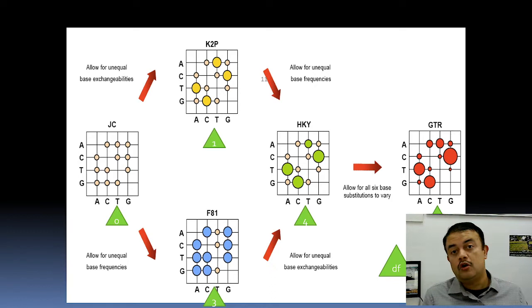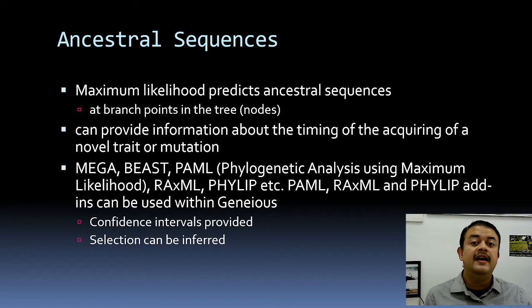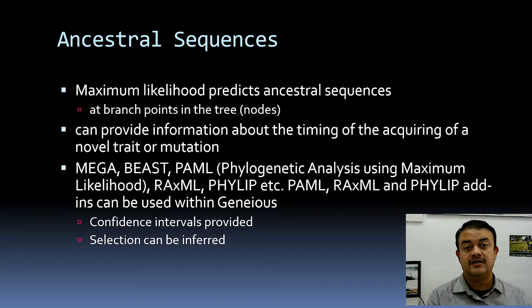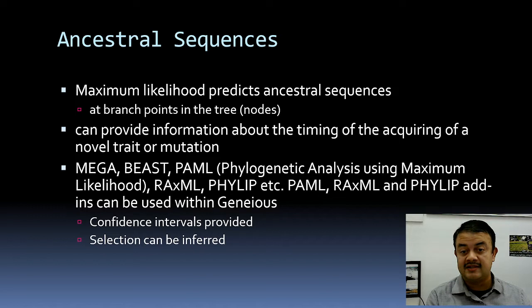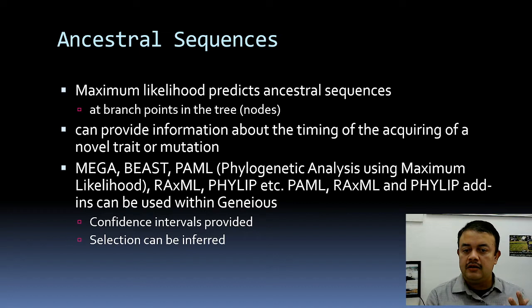ML can also predict ancestral sequences at branch points — similar to maximum parsimony ancestral sequence reconstruction — and can provide information about the timing of acquisition of novel traits or mutations. Software for maximum likelihood includes MEGA, BEAST, PAML (Phylogenetic Analysis by Maximum Likelihood), RAxML, and PHYLIP. All these add-ins are also available in Geneious, which is my favorite tool for Windows users.